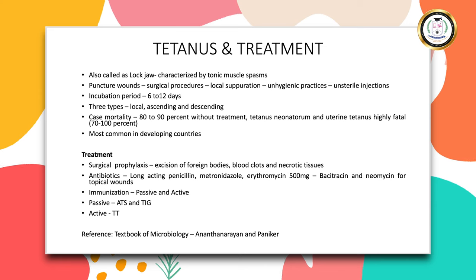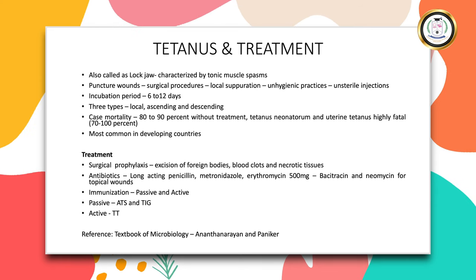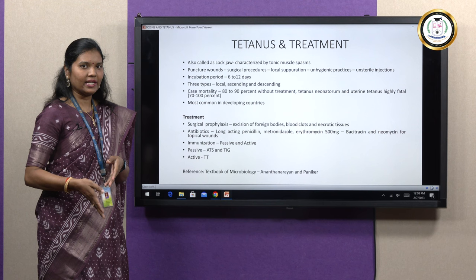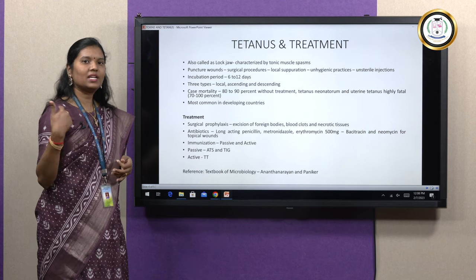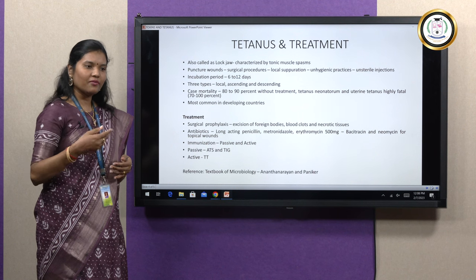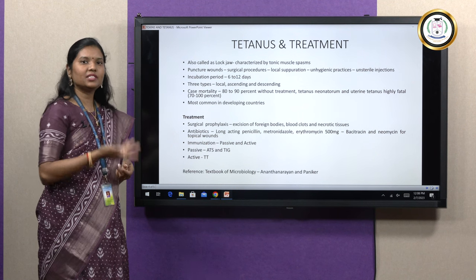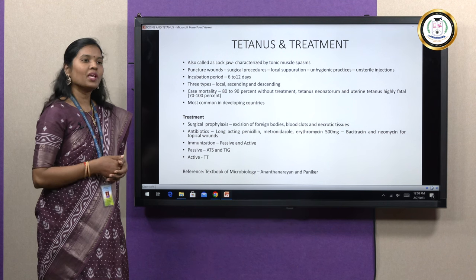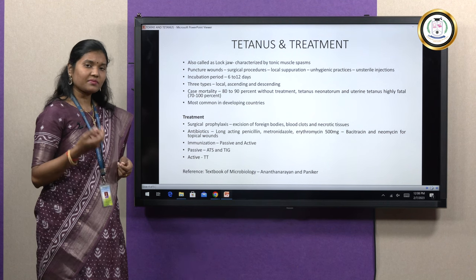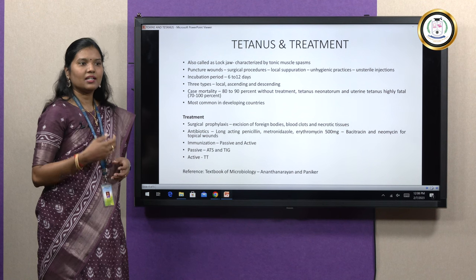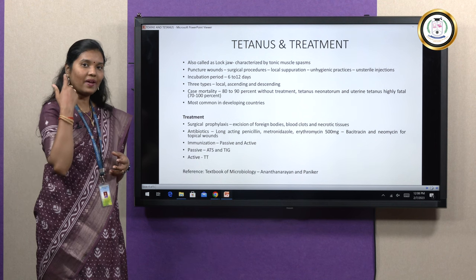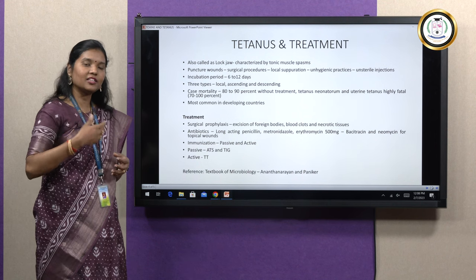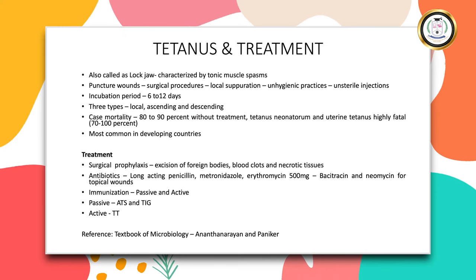Coming to ascending tetanus: the toxin injected into one hind limb produces tonic spasms in that hind limb, which then project to the next hind limb, then go to the trunk as well as the forelimbs — meaning the disease ascends up the spinal cord. That is the ascending form of tetanus. If the toxin is injected intravenously, tonic muscle spasms and rigidity develop in the muscles of the head and neck first, and the disease descends down from head and neck to the legs — that is called descending tetanus.